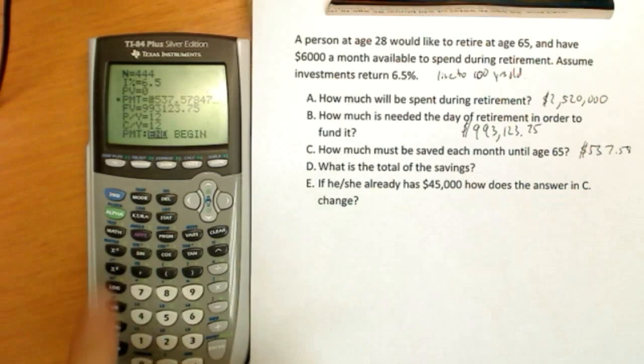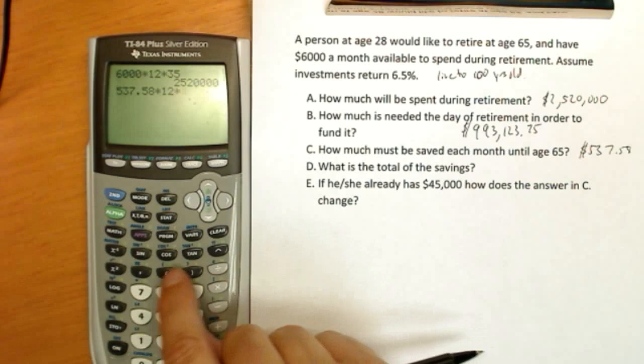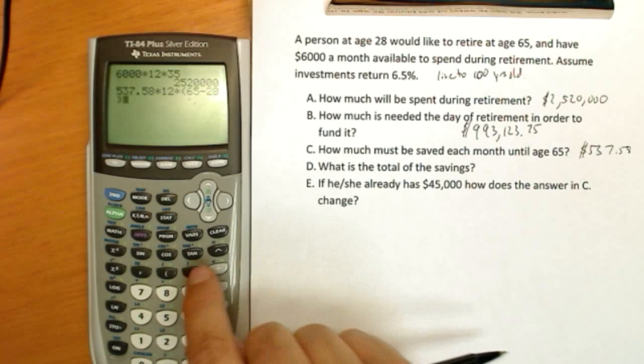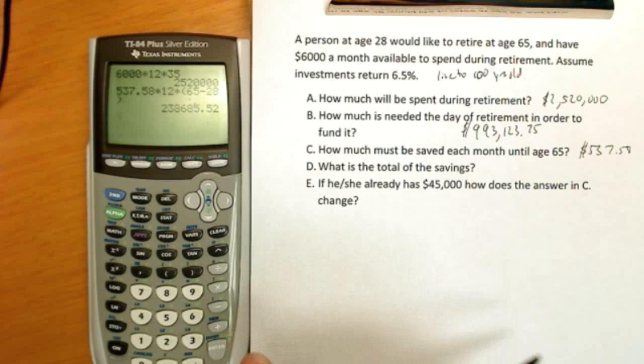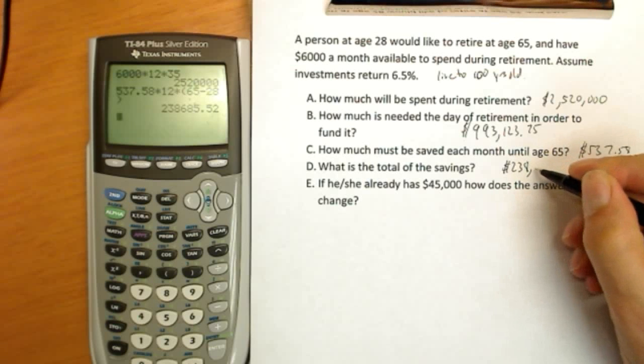What is the total amount we're going to save? Well, we don't need a financial calculator part for that. $537.58 times 12 months in a year times 65 minus 28 years. And we see that we've actually saved $238,685.52.